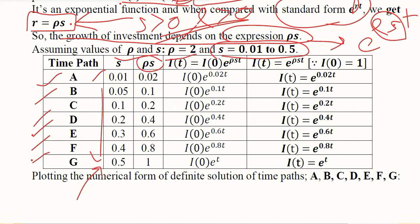ρs can be easily calculated simply by multiplying 0.01 with 2, 0.05 with 2, because the value of ρ is 2. By multiplying, 0.5 into 2 will equal 1. So developing the value of ρs is simply the matter of multiplying the value of s with 2, which is the value of ρ.